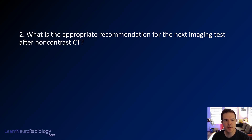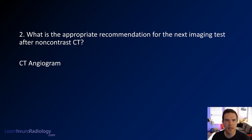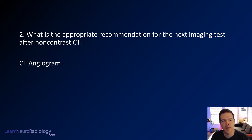Our second question is: what would the appropriate next step be? What is the next imaging you'd want after a non-contrast CT? The answer is a CT angiogram of the head, because the most common cause of non-traumatic subarachnoid hemorrhage is going to be an aneurysm. You want to make sure this patient doesn't have an aneurysm or vascular malformation, and a CTA is the best way to exclude that in a timely fashion.